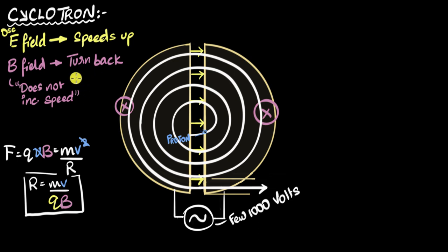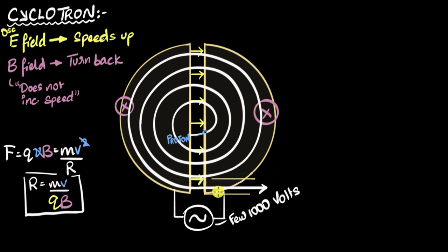Let's start with my intuition. Because I know that it's the electric field that is speeding up my charged particle, and the magnetic field is not speeding it up — it's not doing any work, it's only making it turn. My initial instincts tell me it must be the electric field that decides the speed at which it gets shot out. And probably the magnetic field has no effect because it only makes it turn.